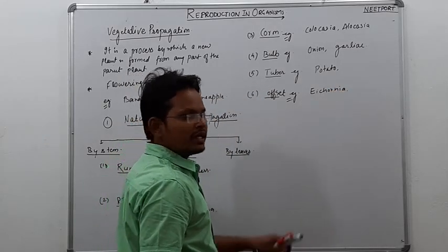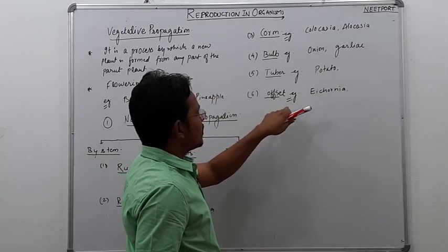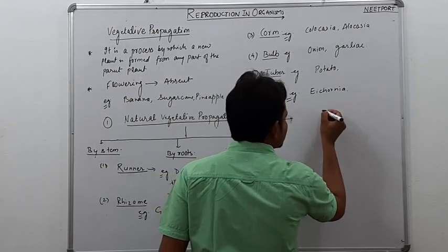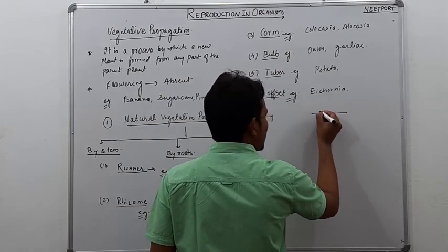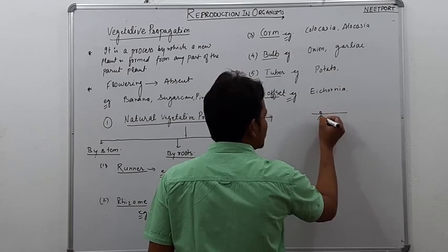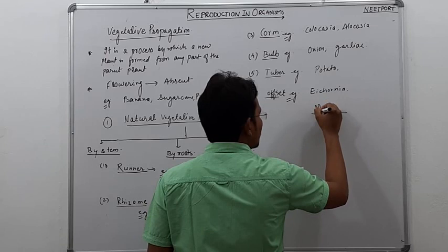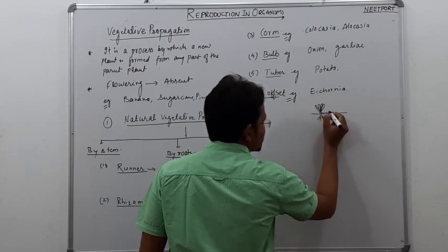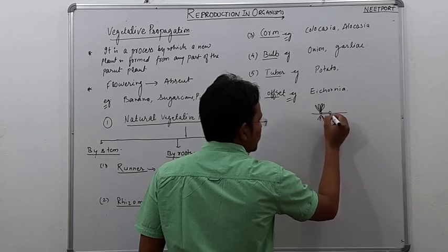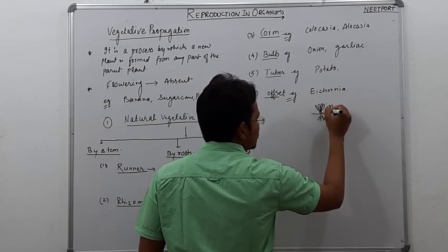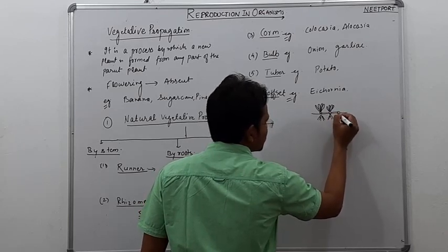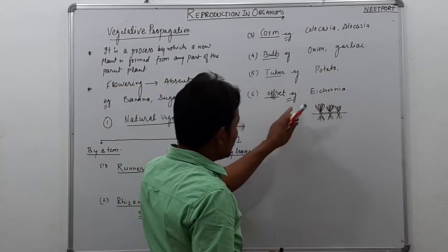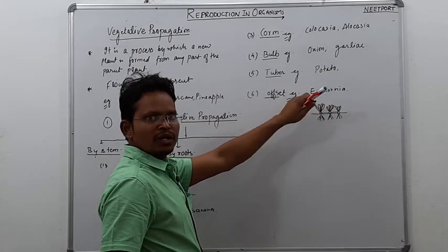If we talk about offset, we call it Eichornia. Eichornia, basically, these are found in aquatic plants. This is like lateral branches. Let's say here is some parent plant, these are the roots, and it forms lateral branches with roots. Here the most important thing is Eichornia is also known as terror of Bengal.